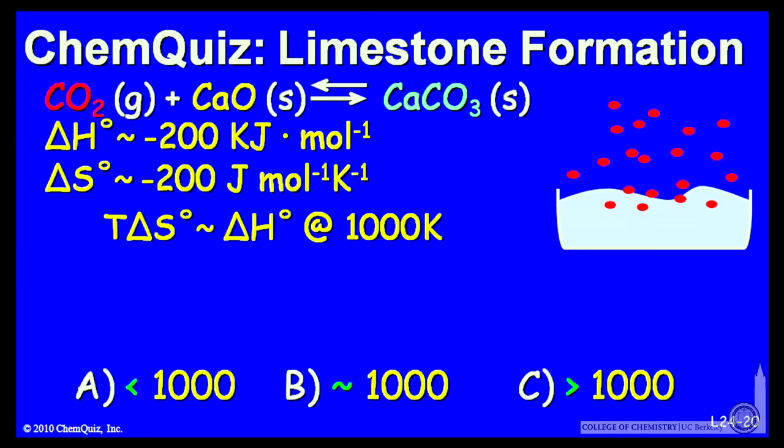So delta S and delta H balance at 1,000 degrees. They're different by a factor of 1,000. And we can look at, well, what about when the temperature is greater than 1,000 or less than 1,000?